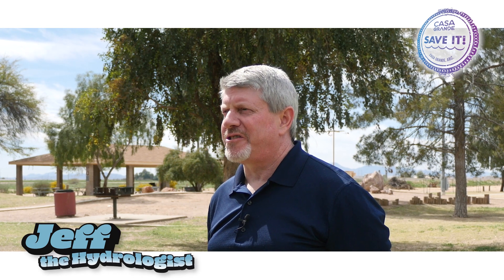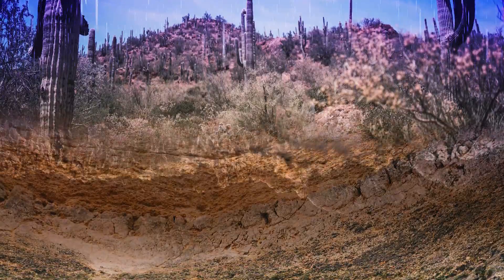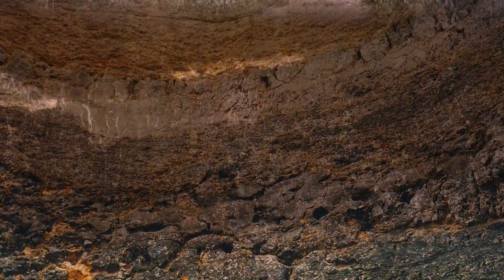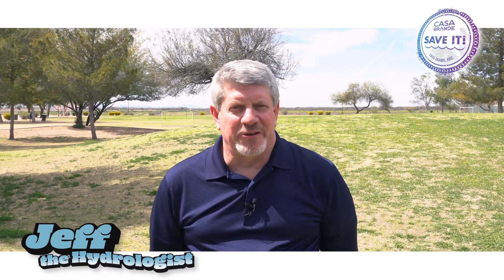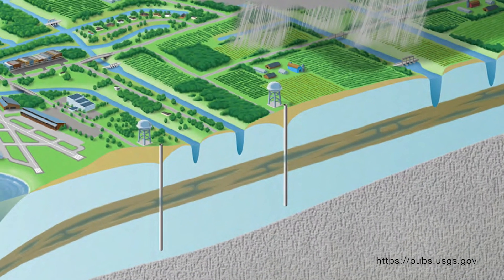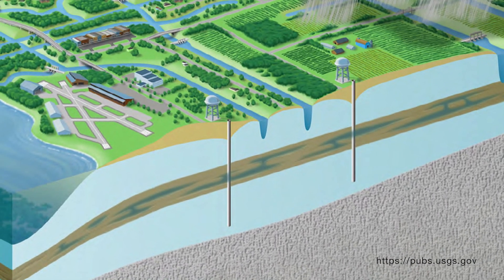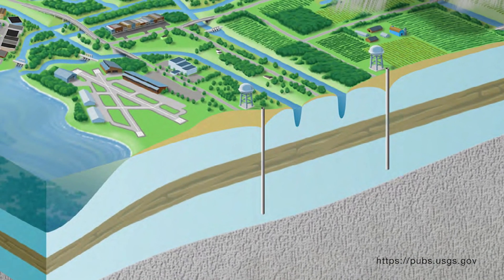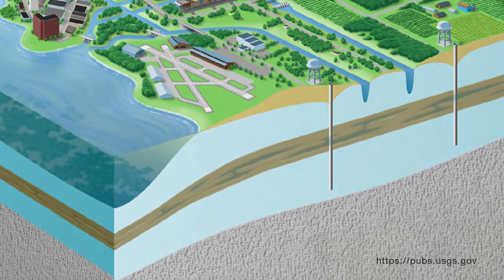An aquifer is a geologic formation that holds and transmits water and allows water to flow horizontally and vertically underground. Water in an aquifer is found in the pore spaces between the subsurface materials. Water in the aquifer is not generally a flowing river or an open lake — there are sometimes large cavities, but it is a misconception to think that it's a river or an underground lake.